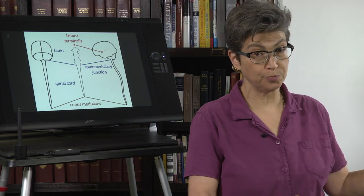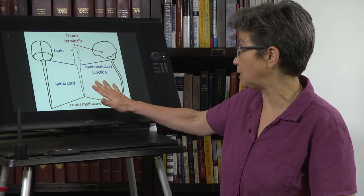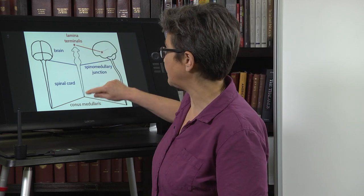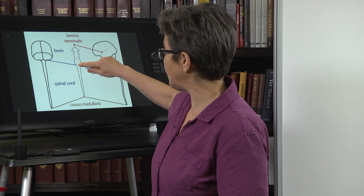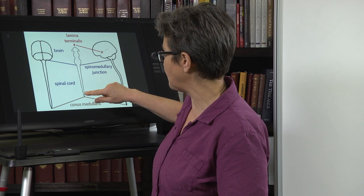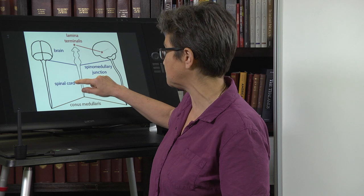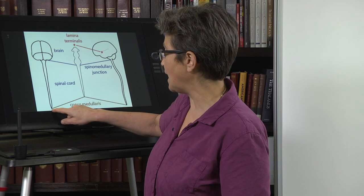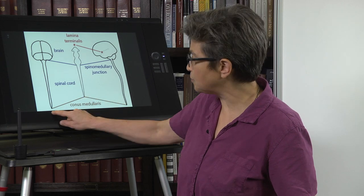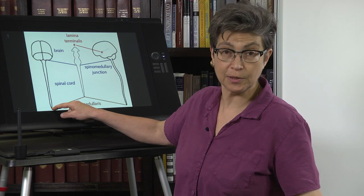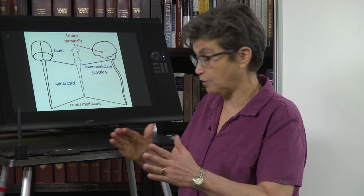Now we're going to spend the rest of the time on how the neural tube becomes the mature brain. Our challenge is illustrated right here. At the end of four weeks, this is what the neural tube looks like. At the back end, it has this simple tube that's going to become the spinal cord. The end of the neural tube is going to become the conus medullaris. No problem there, very simple and straightforward.